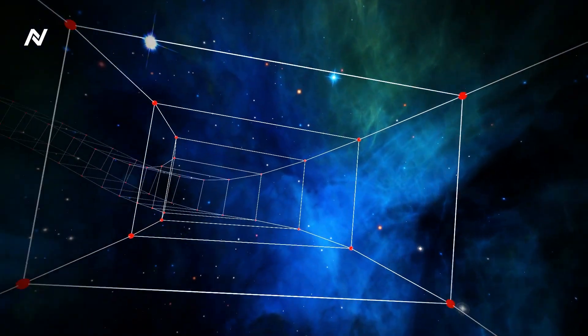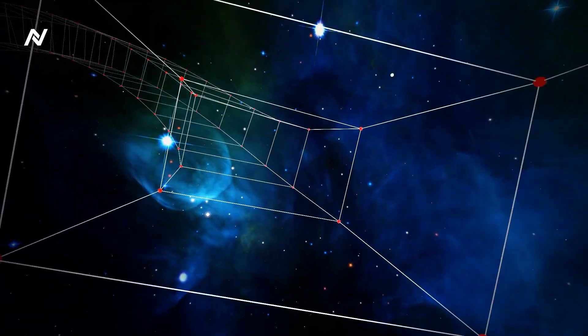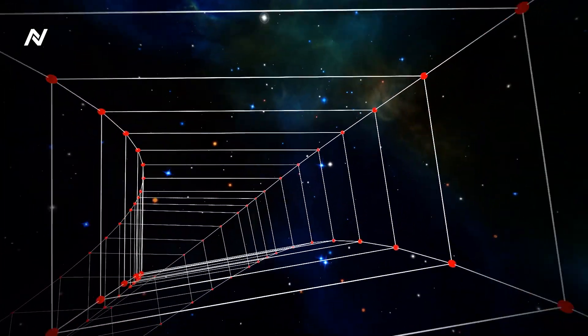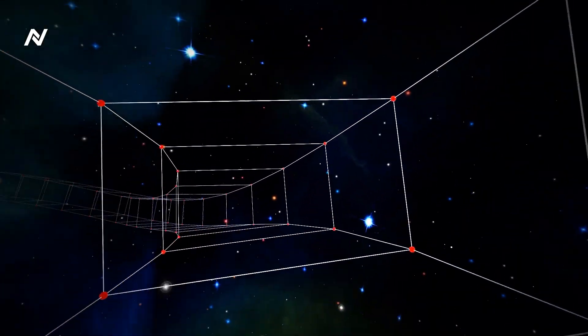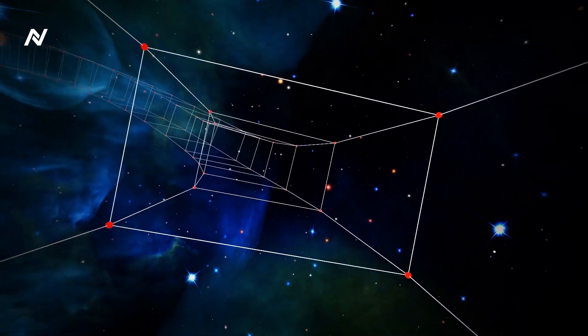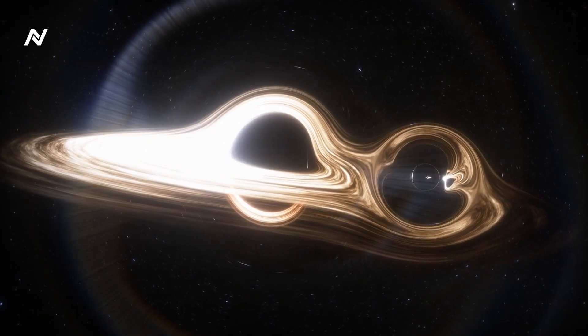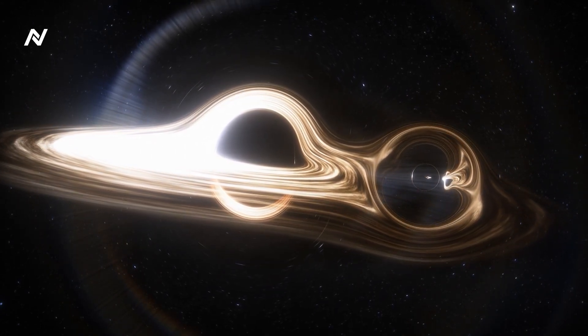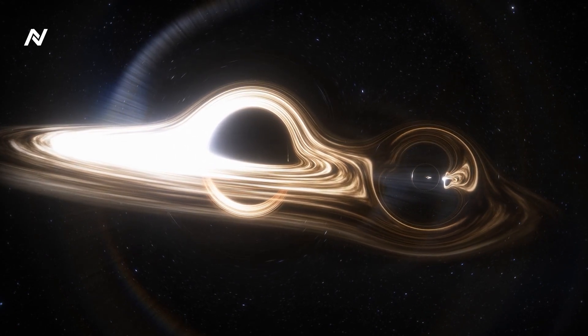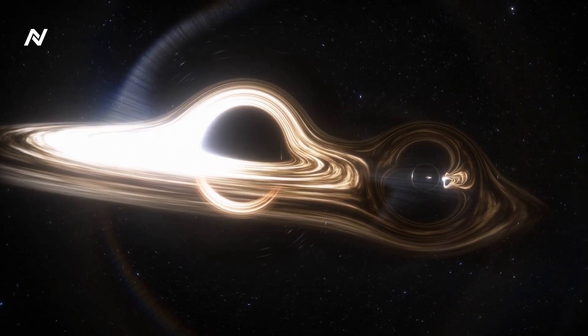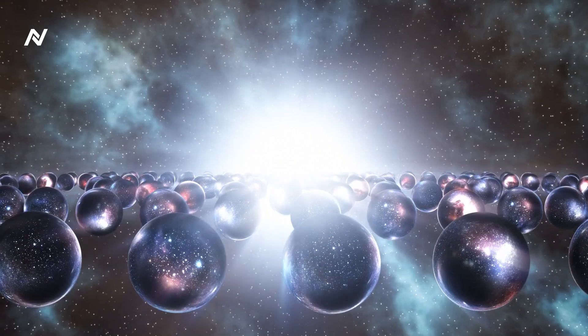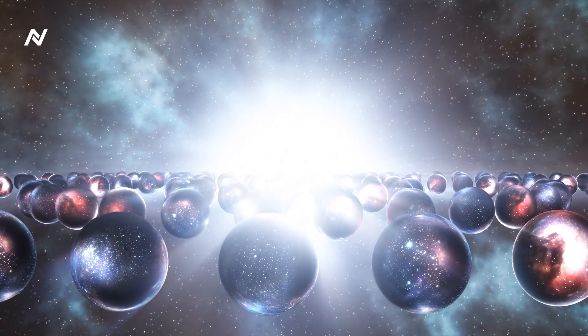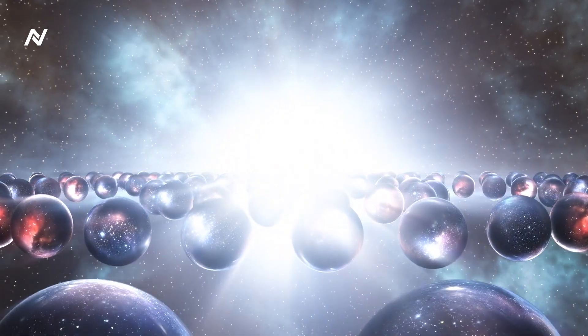Now brace yourself for this. The universe you live in might not be the only one. According to the theory of multiverses, there could be an infinite number of parallel universes, each with its own laws of physics, its own galaxies, and its own versions of you. In one universe, you could be a billionaire. In another, a professional athlete. Or maybe in another universe, the laws of physics are so different that life as we know it doesn't exist at all. Scientists are still trying to prove or disprove the existence of parallel universes. But the idea is enough to make you wonder, could there be other versions of you, living out entirely different lives in other dimensions?